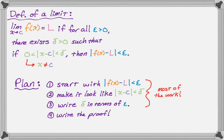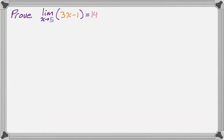We want to prove that the limit as x approaches 5 of the quantity 3x minus 1 is equal to 14. One thing that's a little different with these is that you have to actually know the limit — we're going to verify that it's the limit. The definition won't actually tell us what the value is; for that you need other techniques like algebra.